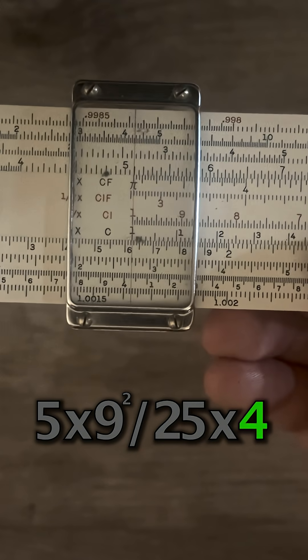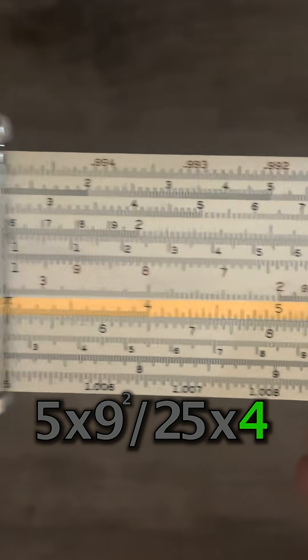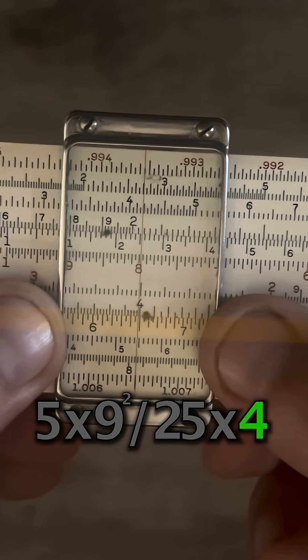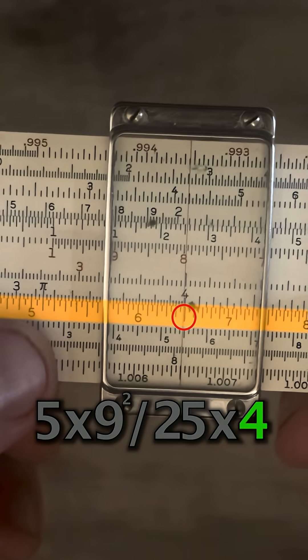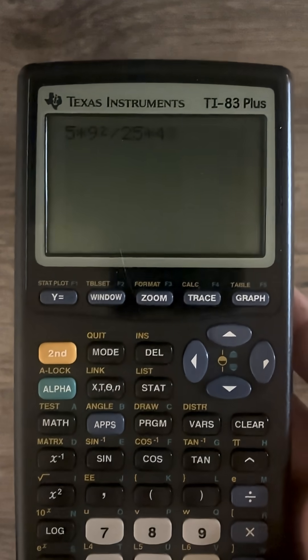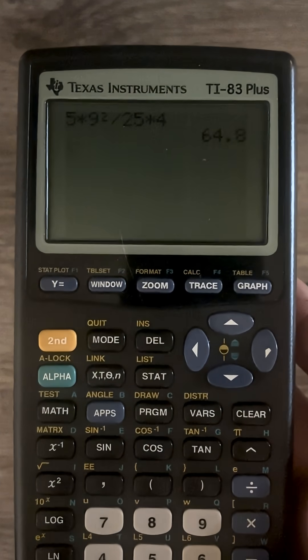And our last number is multiply by 4. So we'll just move over to 4 on the c scale, and that'll give us 64.8-ish. And if we go ahead and put that in the calculator, we get 64.8.